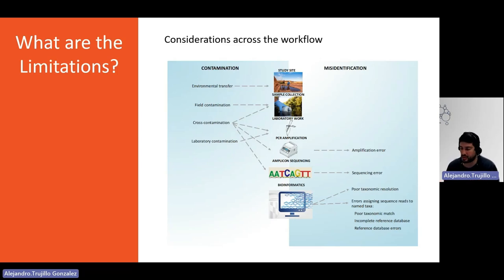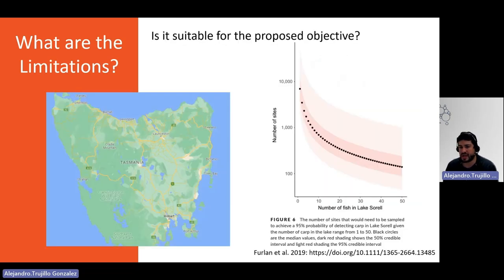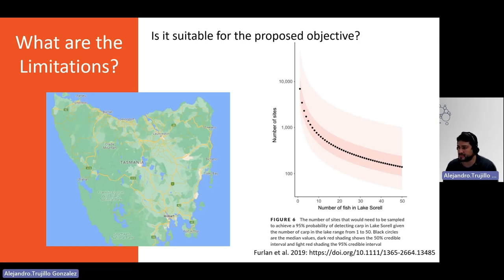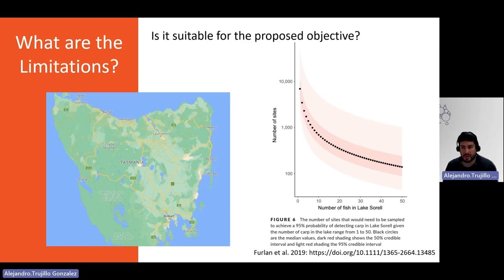What I'd like to share from the perspective of the end user — the stakeholder — is understanding what can be done. The first thing you should consider is whether eDNA is actually the most suitable way to approach a given objective. For example, if you want to find a fish in a given lake, river, or ocean, you need to consider the habitat that fish species inhabits, how big it is, and what the complications around that ecosystem are when it comes to collecting environmental samples. In some cases, collecting samples is not as straightforward as you might hope.